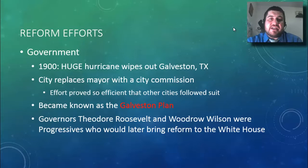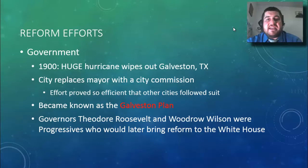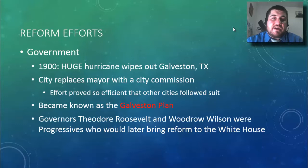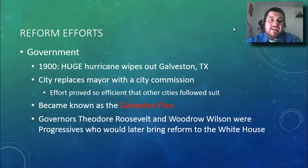In 1900, a massive hurricane wiped out Galveston, Texas on the Gulf of Mexico — still one of the biggest on record. The city replaced the mayor with a city commission to make decisions and get the city back on its feet. This proved so efficient that other cities followed suit, becoming known as the Galveston Plan — reorganizing city government to include a mayor and a city commission. Governors Theodore Roosevelt and Woodrow Wilson would bring these progressive ideas to the White House.